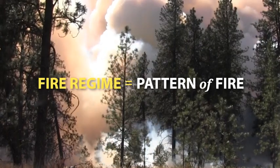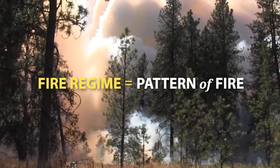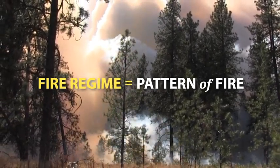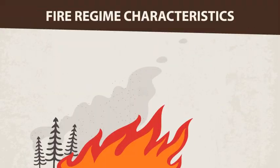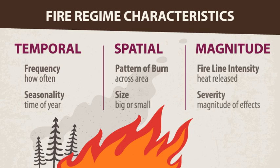The fire regime also has a big influence on the vegetation and climate. Fire regimes are as varied and interesting as the ecosystems where they burn. Fire regime characteristics can be broken down into seven attributes, which can be categorized into temporal, spatial, and magnitude.